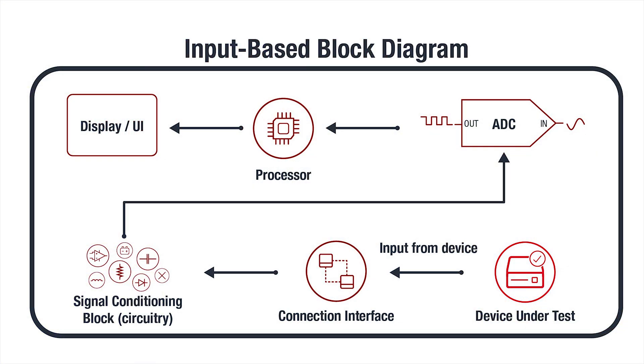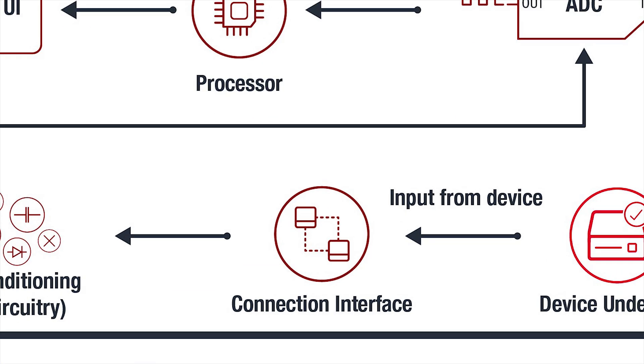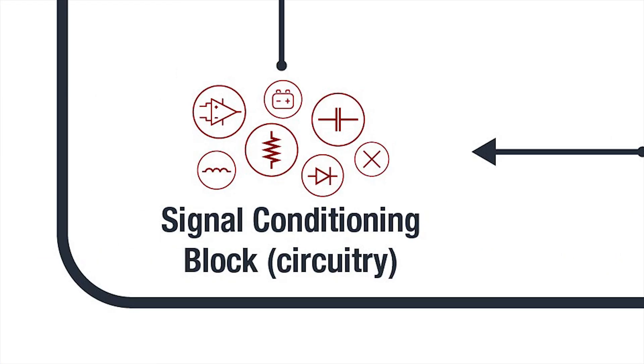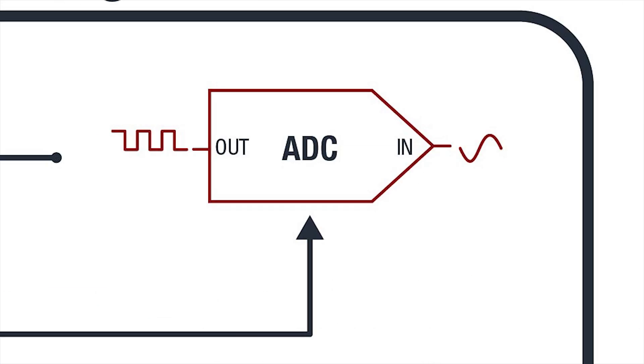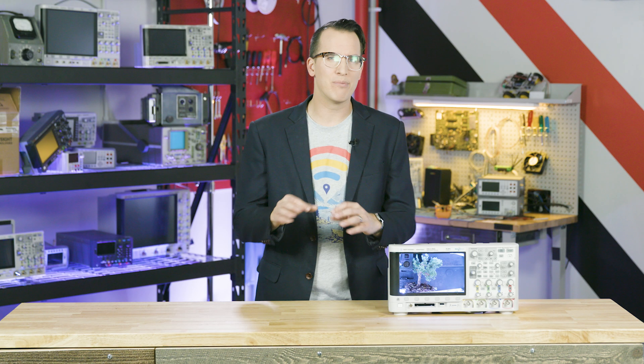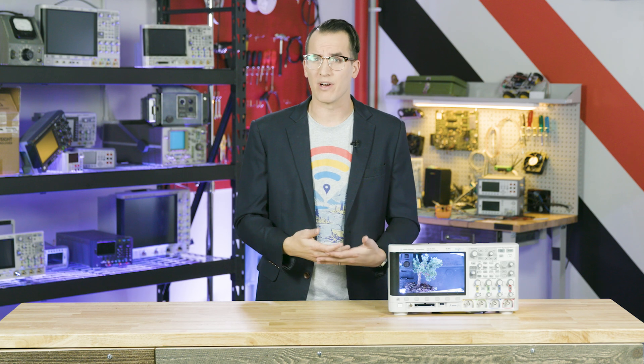To recap, input-based test gear has a connection interface, a signal conditioner, an ADC, a processor, and a data readout. That's how input-based equipment works.